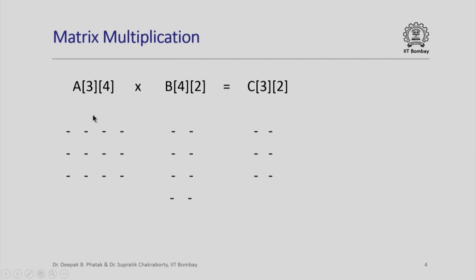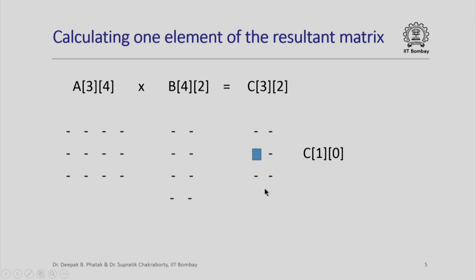So if this is how matrix A looks and this is how matrix B looks, then this is how matrix C will be. The multiplication operation is involved in that every element of the C matrix is actually calculated using several elements of A and several elements of B.